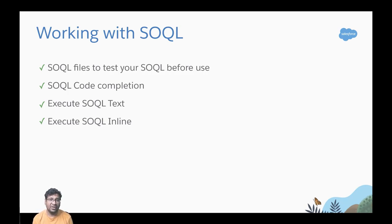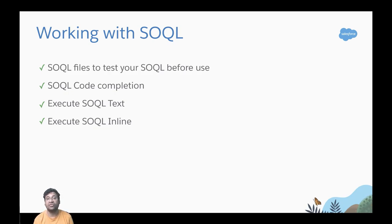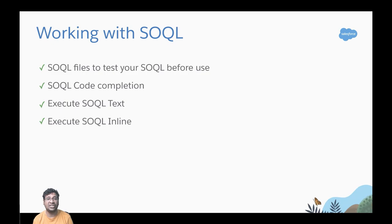Our scratch org is ready and we can start writing code, beginning with SOQL. Salesforce extensions provide various options to write and run SOQL queries: you can write in a .soql file, highlight a query from a .soql or Apex file and run it, or execute from the Command Palette. Code completion is supported for SOQL queries — make sure you refresh sObject definitions from the Command Palette before using this feature. The latest VS Code extension update also pops up a reminder to refresh sObject definitions when you start VS Code.